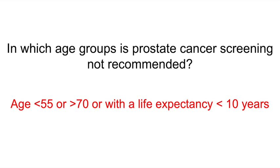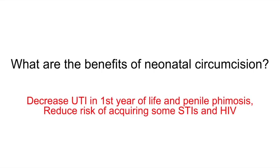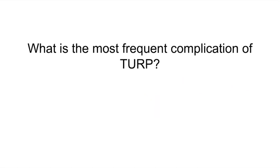What are the benefits of neonatal circumcision? Decreased UTI in the first year of life, decreased risk of penile phimosis, and reduced risk of acquiring some STIs and HIV. What is the most frequent complication of TURP? Retrograde ejaculation.